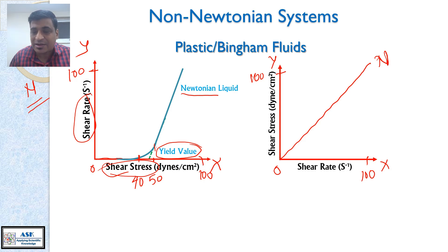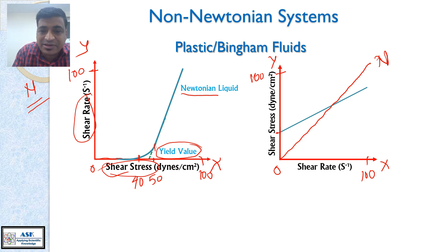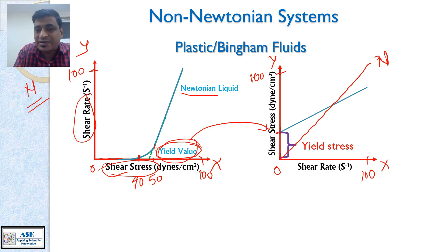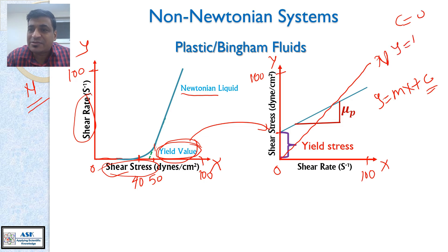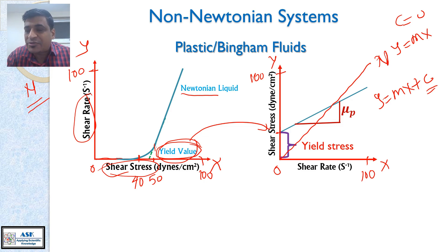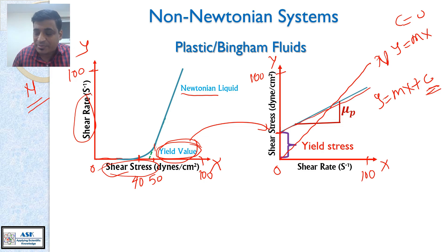That is not happening with plastic fluids. They have a certain y-intercept, and that y-intercept exists because of the yield value. That y-intercept is called yield stress, and from the slope you are getting the plastic viscosity. This is a straight line equation: y = mx + c. But in case of Newtonian liquids, c is equal to 0, so it is y = mx. In case of plastic non-Newtonian liquids, we have y = mx + c. That is the big difference between plastic fluid and Newtonian fluids.